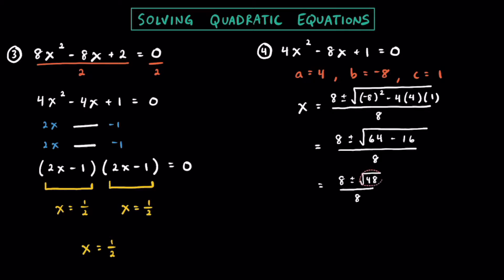Let's see if we can break down this radical of root 48. I think we have 16 in there and a 3, since 16 times 3 is 48 and 16 is a perfect square. So we have 8 plus or minus — the square root of 16 is 4 — so it's 4 root 3 over 8. At this point we can divide everything by the GCF of 4 and we'll get 2 plus or minus root 3 over 2. Those would be the two irrational but real solutions for this quadratic equation.